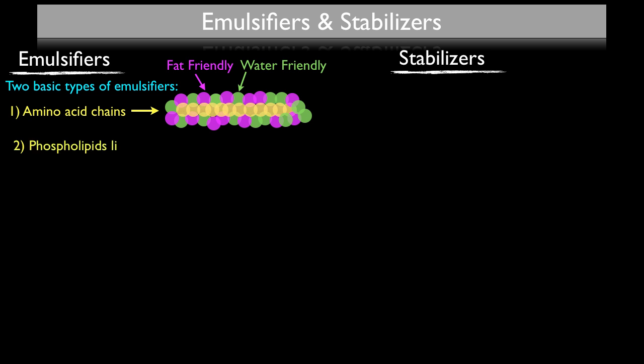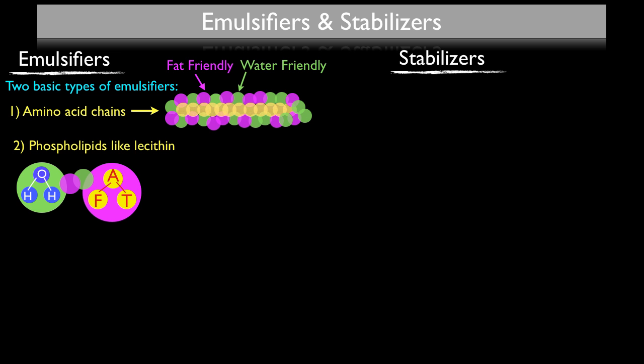The second type of emulsifier are phospholipids, like lecithin. The way these phospholipids work — let's say we have our water molecule here, H2O, and a fat molecule hanging out right next to it, representing olive oil or canola oil, whatever you're using to make your emulsification. You add some lecithin to the mix, and what happens is lecithin has a water-soluble head and a fat-soluble tail, so it can actually link the fat and the water together.